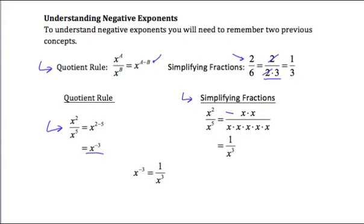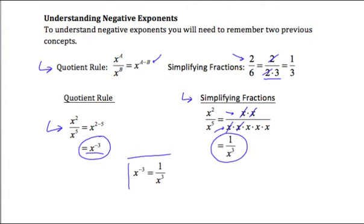In the numerator we have 2 factors of x multiplied; in the denominator we have 5 factors of x. Dividing out common factors — an x with an x, and another x with another x — leaves 1 in the numerator and x to the third in the denominator. So x to the negative third and 1 over x to the third are equivalent. That's what happens with a negative exponent: we end up with a reciprocal.